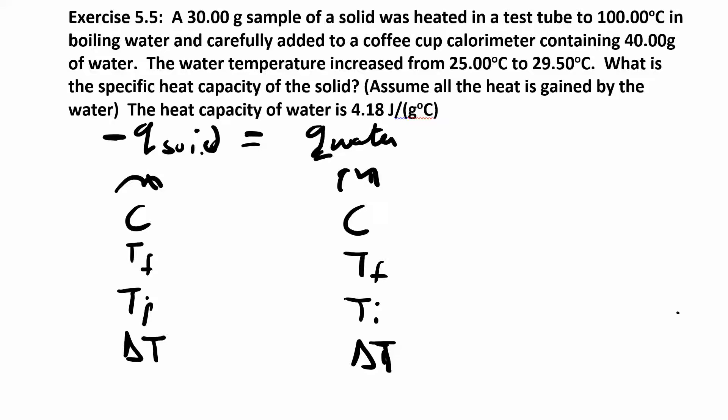Now that we have this setup, we're going to go through the problem again and pull out all the numbers. I have a 30 gram sample of solid—that's the mass of my solid. It's heated in a test tube to 100 degrees celsius—that's the initial temperature of the solid. I take that out of the boiling water and put it in the coffee cup calorimeter, which contains 40 grams of water. This is the water in the coffee cup: 40 grams. The initial temperature was 25, and the final temperature went up to 29.5.